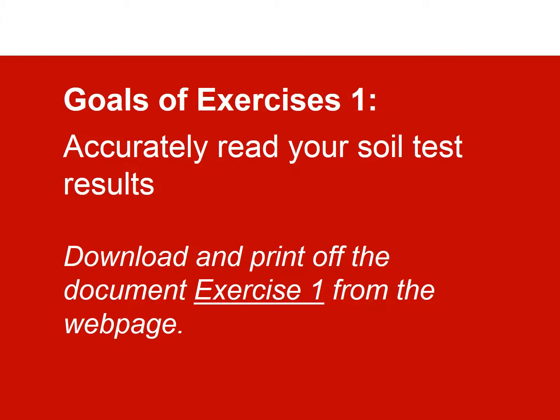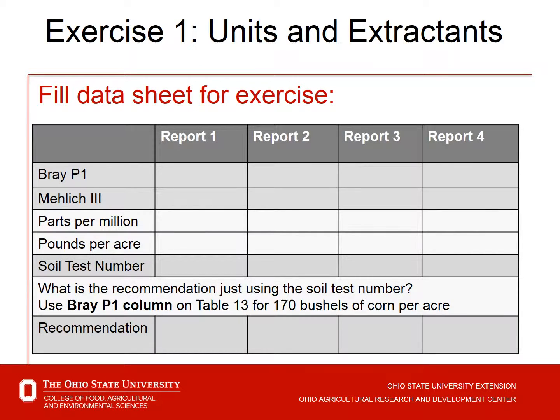We're set up to do Exercise 1 with that background. Exercise 1 walks through four soil test reports and has us pull out the phosphorus information. If you haven't already, stop the video, go back and download the four pages for Exercise 1 so you can follow along. We're going to look at four reports from blind samples we sent to four different labs and pick out the phosphorus valuation on each of those four reports.